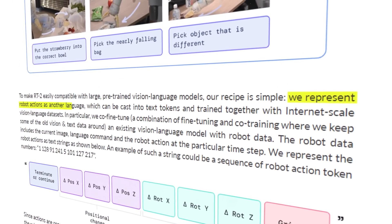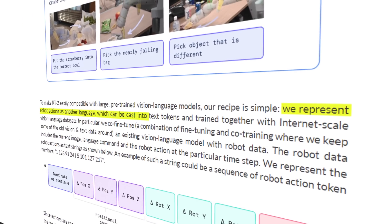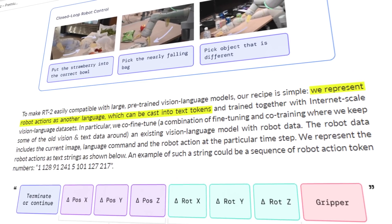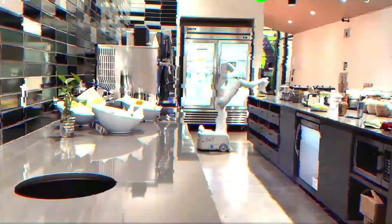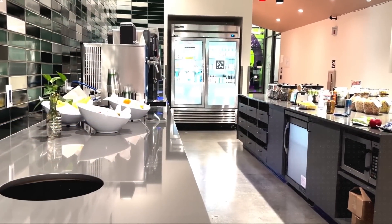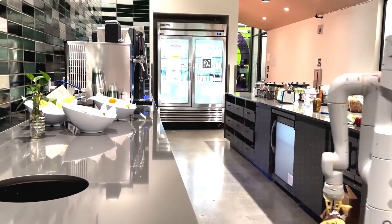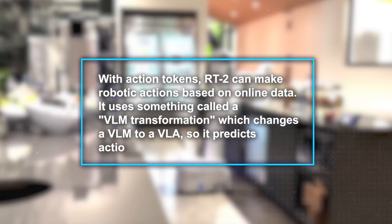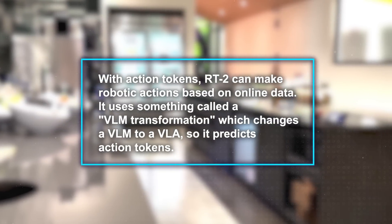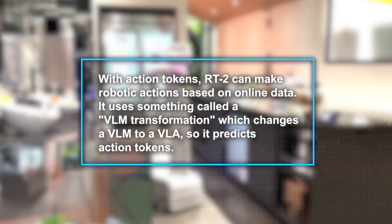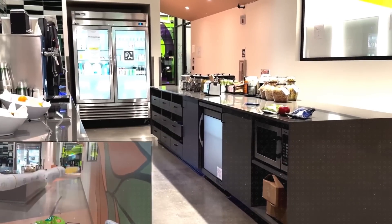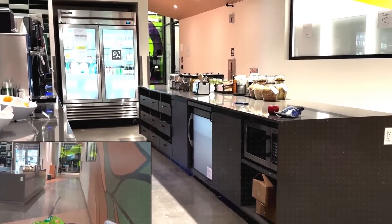Second, RT2 controls robots using action tokens — think of these as simple commands. An example could be 'move left 0.5,' telling a robot to go half a meter left. These tokens are easier for people to understand, can be used on various robots or places, and work well with transformer models that deal with token sequences. With action tokens, RT2 can make robotic actions based on online data, using VLM transformation, which changes a VLM to a VLA so it predicts action tokens.